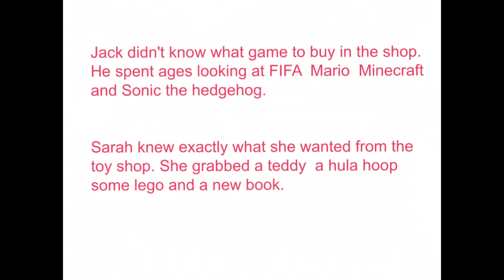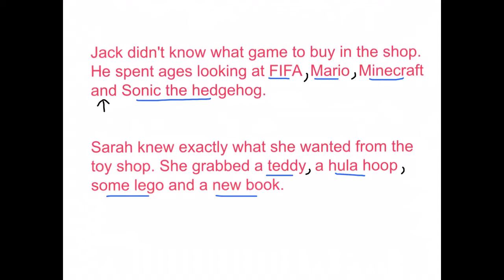Here are two more examples. First: Jack didn't know what game to buy — he spent ages looking at FIFA, Mario, Minecraft, and Sonic the Hedgehog. We put commas between FIFA and Mario, and between Mario and Minecraft, and use 'and' before Sonic as the last item. Second: Sarah grabbed a teddy, a hula hoop, some Lego, and a new book — commas between each item, with 'and' before the last.